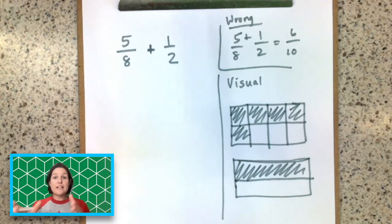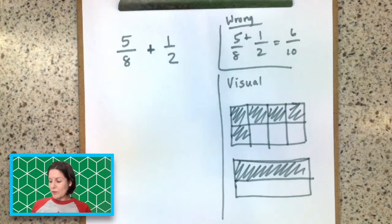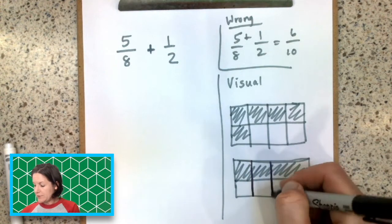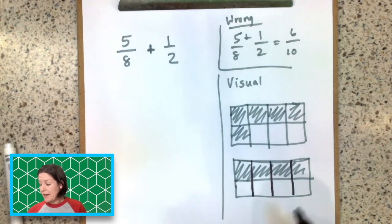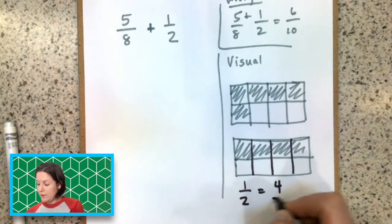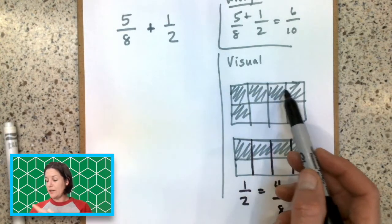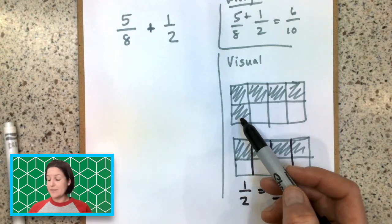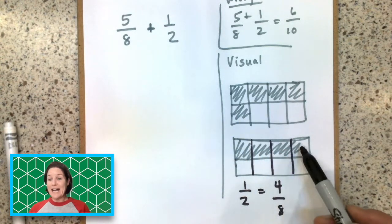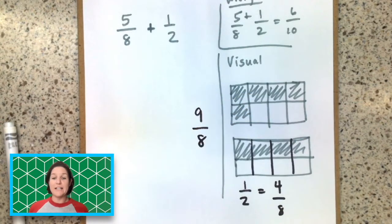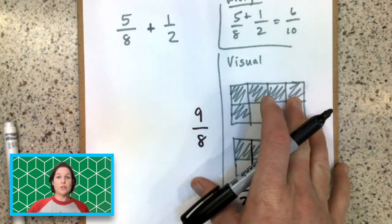What we need to do is break them into the same size piece. And this one's kind of simple because what I could do is just take this 1 half — and look, 1 half could also be broken into eighths, and I could get 4 eighths. 1 half is equal to 4 eighths. So now if I added those, I would have 1, 2, 3, 4, 5, 6, 7, 8, 9 — I would have 9 one-eighth pieces, so 9 eighths. That's what's happening visually.